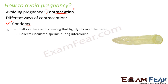Condoms are coverings shaped like the penis, so they fit tightly over it. After the condom is put on, the sperms ejaculated are collected inside the covering, so they do not enter the body of the female at all. With no sperm inside the female body, there is no fertilization and no pregnancy. Condoms are a very effective way of contraception.